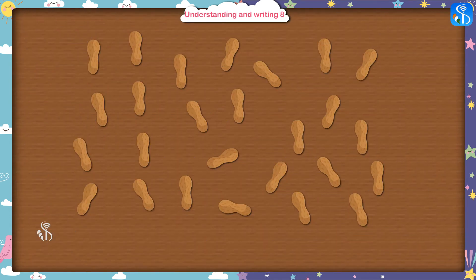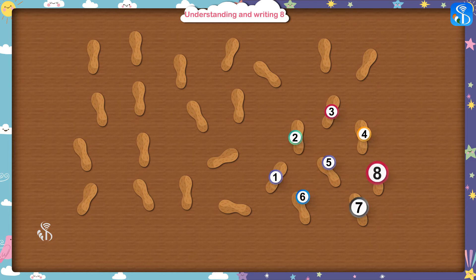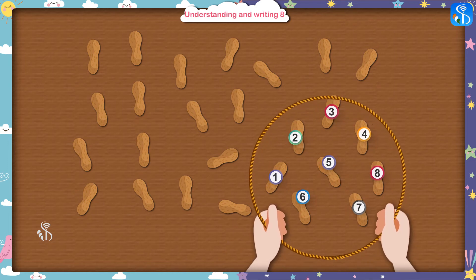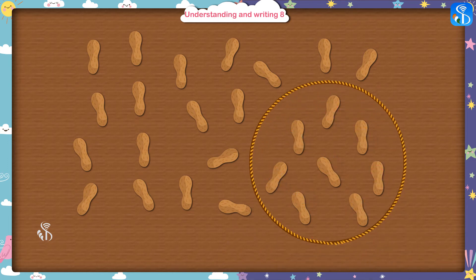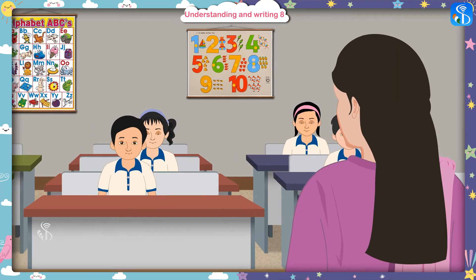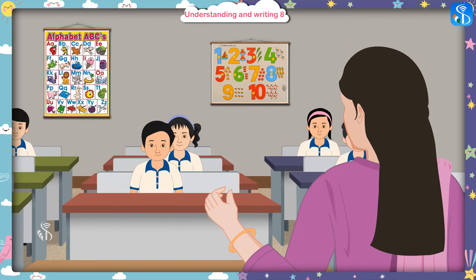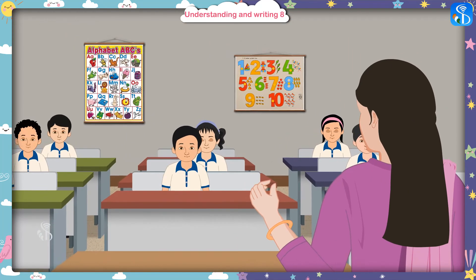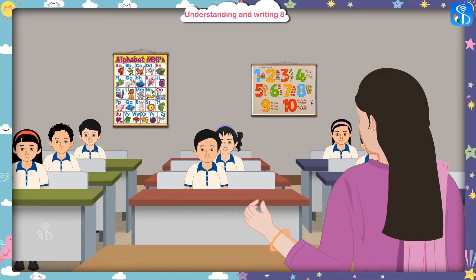Now these are groundnut pods. You have to place the rope around 8 pods. Well done, Sai Li. Very good. You have understood number 8 very well.